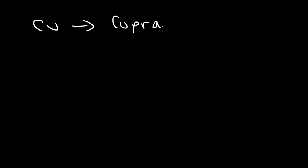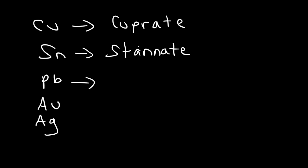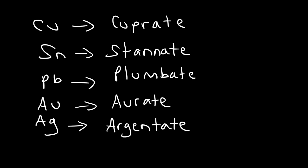Just in case you encounter these elements, you need to know their Latin names. If you see Cu, the Latin name is cuprate. Sn is stannate. For Pb (lead), it's plumbate. Au (gold) is aurate. And Ag (silver) is argentate. Those are some Latin names for elements you may encounter when naming coordination compounds. Hopefully this gave you a good understanding of how to name coordination compounds.